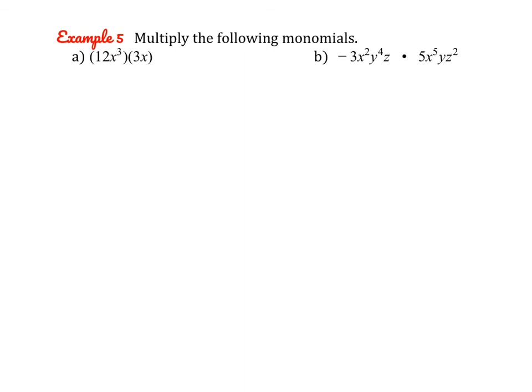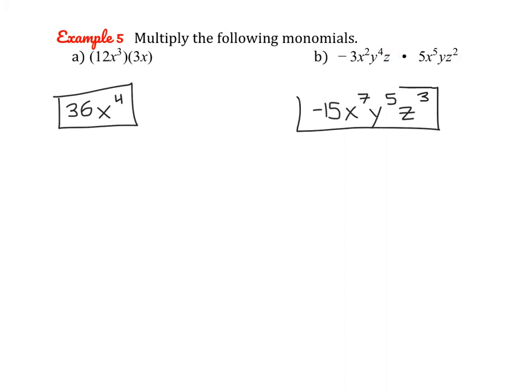Let's practice that — we're going to multiply two monomials together. Whenever you're multiplying two monomials, start by multiplying the coefficients: 12 times 3 is 36. Then for the x base, add up the exponents: 3 plus 1 gives x to the 4th. For the second example: negative 3 times 5 is negative 15. For x, 2 plus 5 gives x to the 7th. For y, y to the 4th times y to the 1st gives y to the 5th. And for base z, 1 plus 2 gives z cubed.